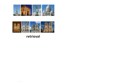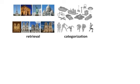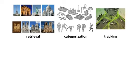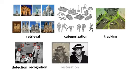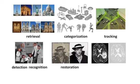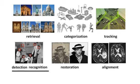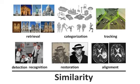In a wide range of computer vision applications such as retrieval and categorization of images and shapes, object tracking, detection, recognition and classification, image reconstruction and restoration, alignment and registration, the common denominator is the notion of similarity.